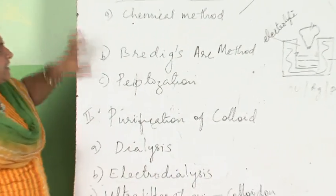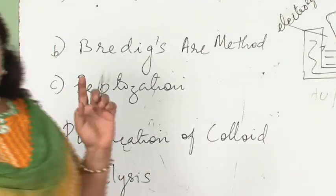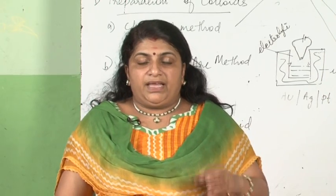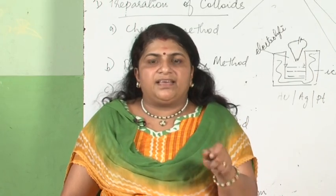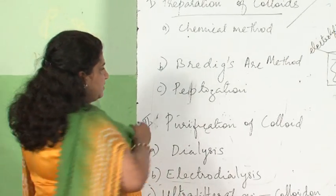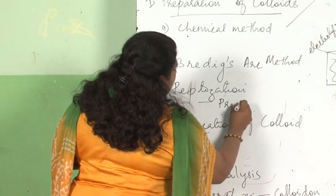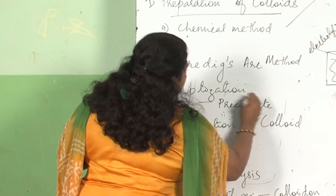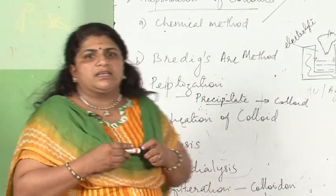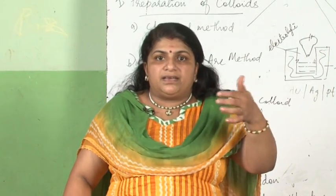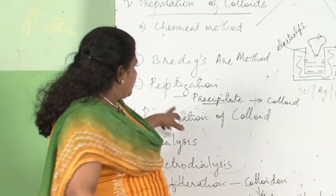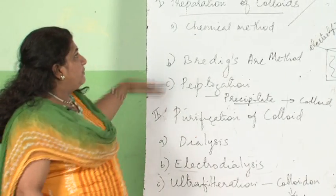The third method of preparation of colloid is peptization. Peptization means conversion of a precipitate into a colloid, either by adding a suitable electrolyte or by grinding and making it into fine powder of colloidal size. The difference between a precipitate and a colloid is the particle size — in a precipitate the particle size is too big. We make it small either by adding an electrolyte or by grinding it into fine particles and mixing with the medium. That is peptization.